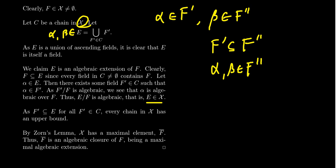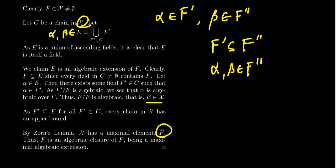By construction, E is the union of all fields in the chain, so E contains each individual field F' in C. Therefore E is an upper bound for the chain C. Since C was an arbitrary chain, every chain in X has an upper bound. By Zorn's Lemma, X has a maximal element — call it F-bar. F-bar is a maximal algebraic extension of F. As we just saw with the previous lemma, maximal algebraic extensions are algebraic closures. Therefore F-bar is an algebraic closure of F, and algebraic closures exist.